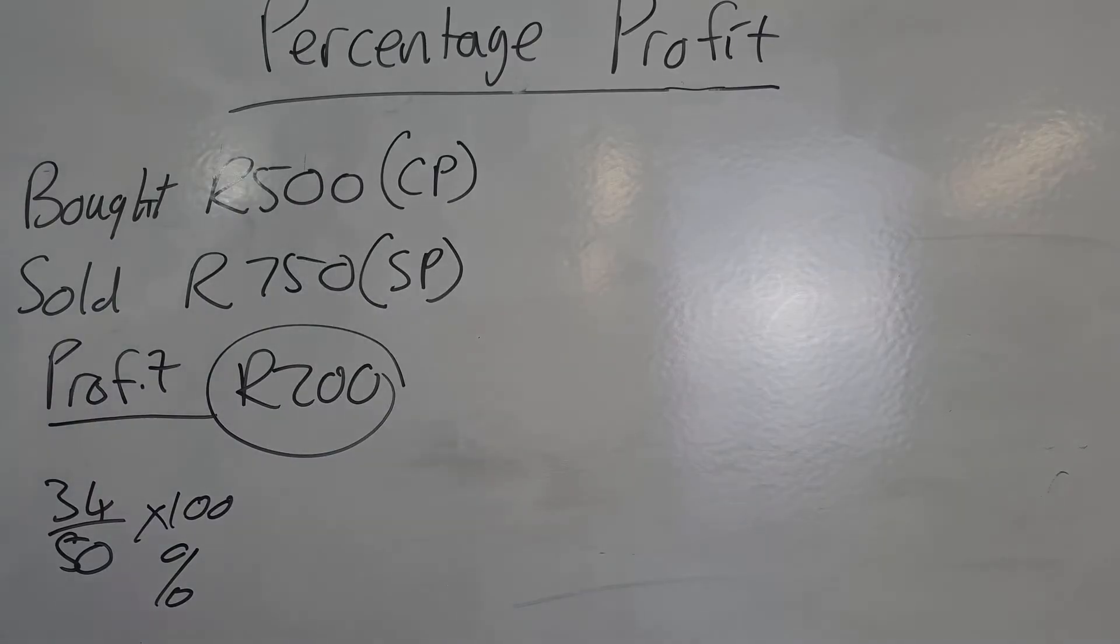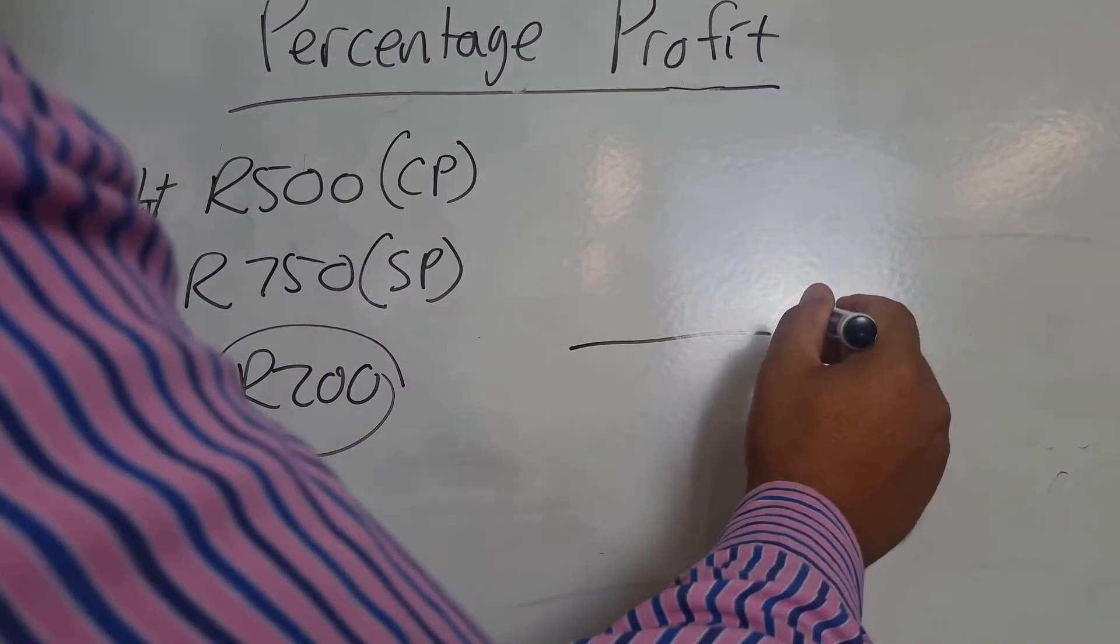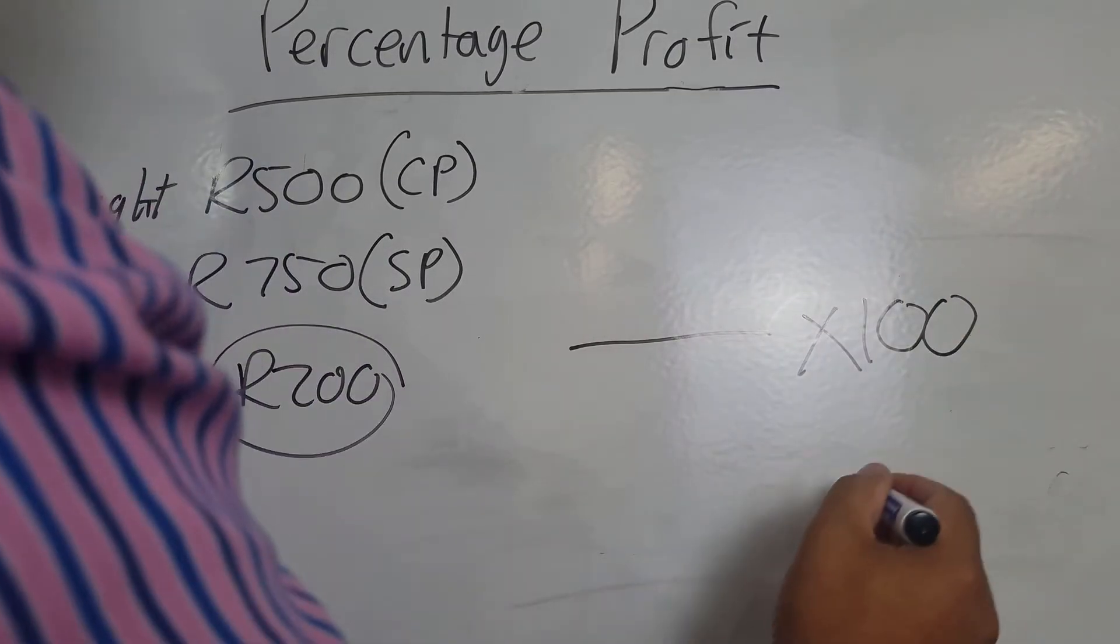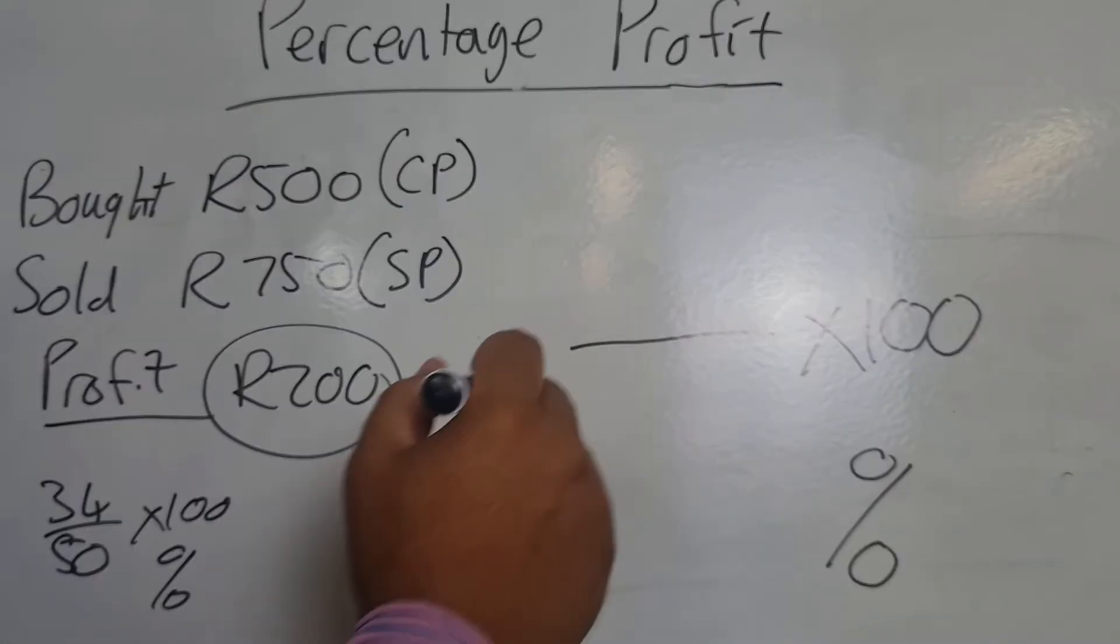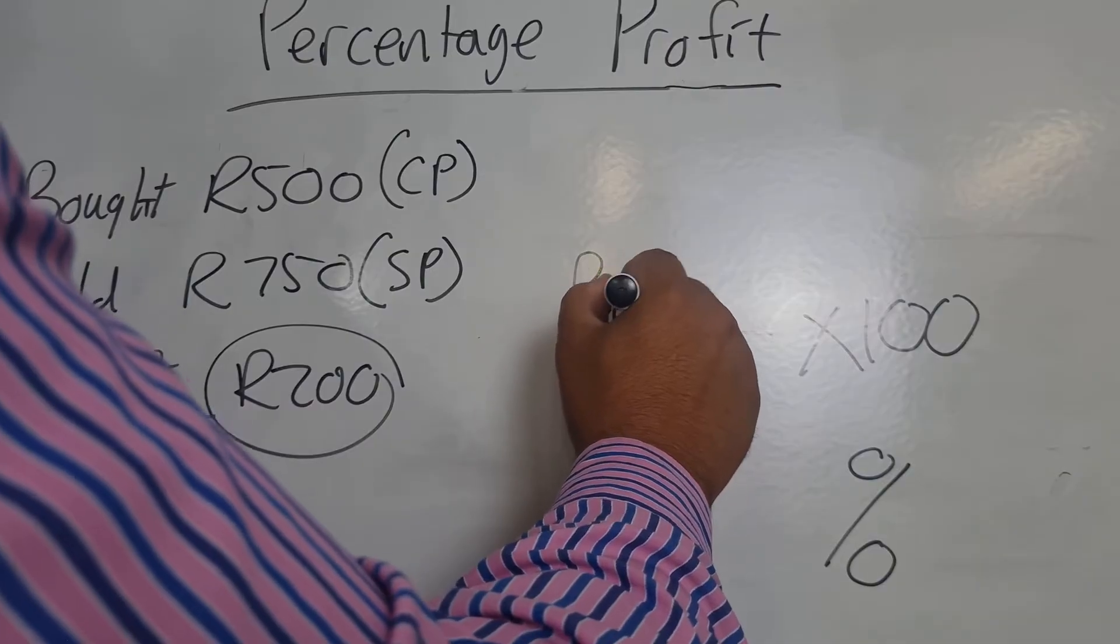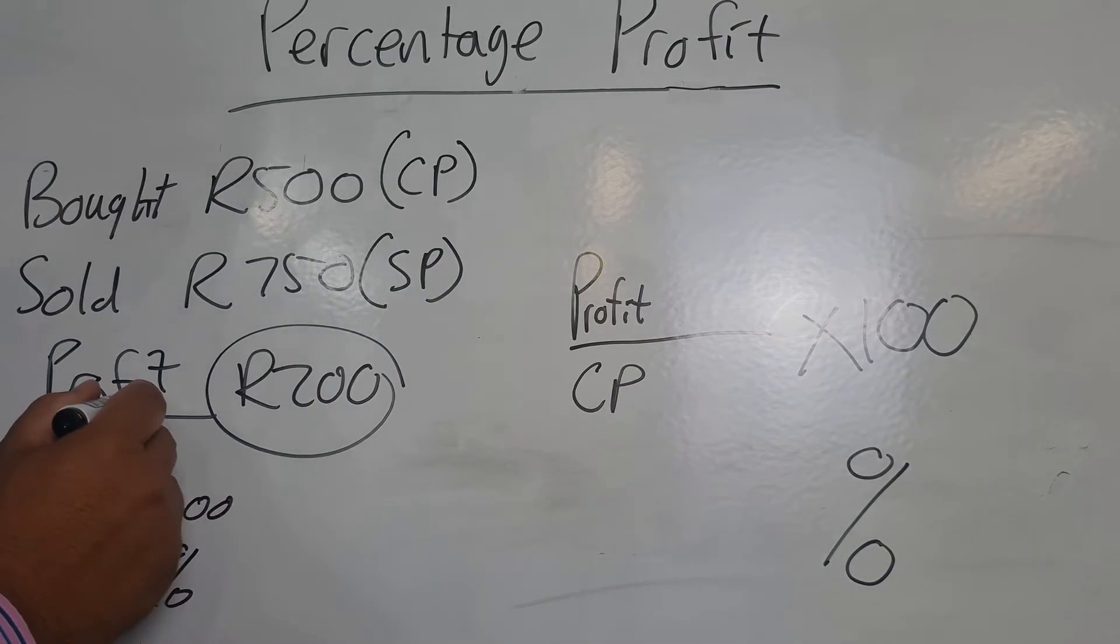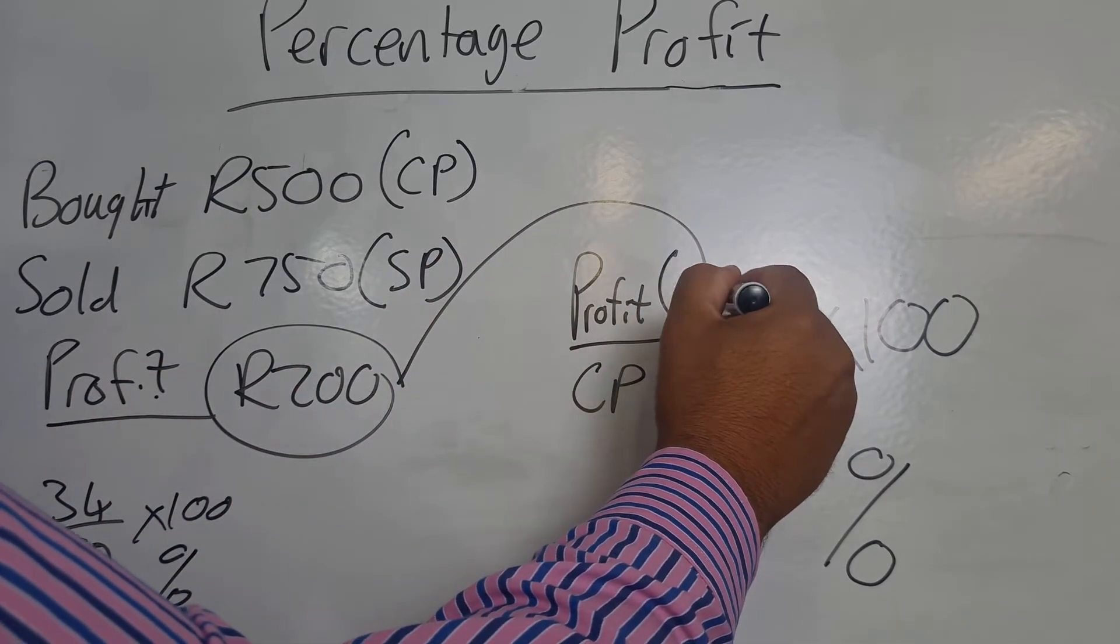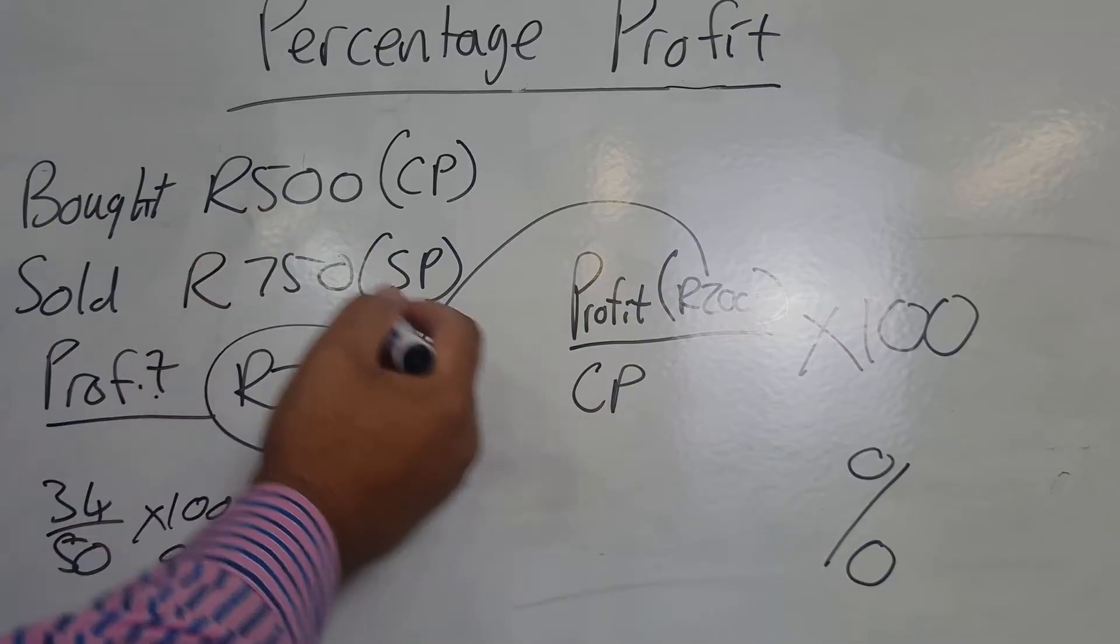So we're going to do exactly the same thing, but what are we going to divide, what are we going to multiply by 100 in order to get our percentage? Well, what we need to do is take whatever our profit is and we're going to divide that by the cost price. Now do we have those figures? Yes we do. What are those figures? There's my profit, 200 rand. What is my cost price, what did I buy it for? 500 rand.